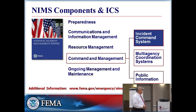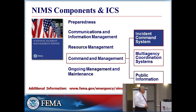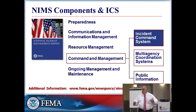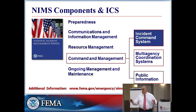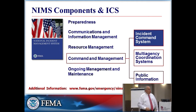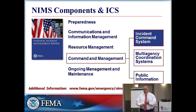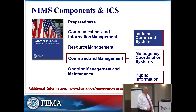There are five components of the National Incident Management System: Preparedness, Communications and Information Management, Resource Management, Ongoing Maintenance and Management, and Command and Management. What we're talking about today is specifically Command and Management — the Incident Command System. Beyond this, there are Multi-Agency Coordination Systems for large events where city and county work together. And public information is critical — in your situation, you want the public to know how to care for animals, where to take them, or where to find them.